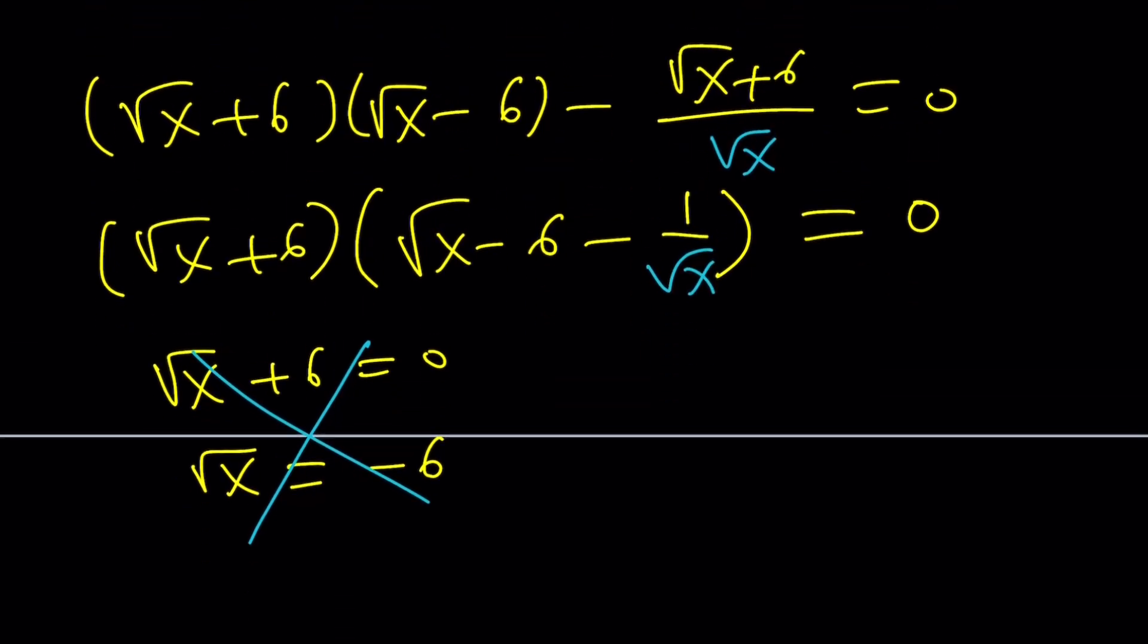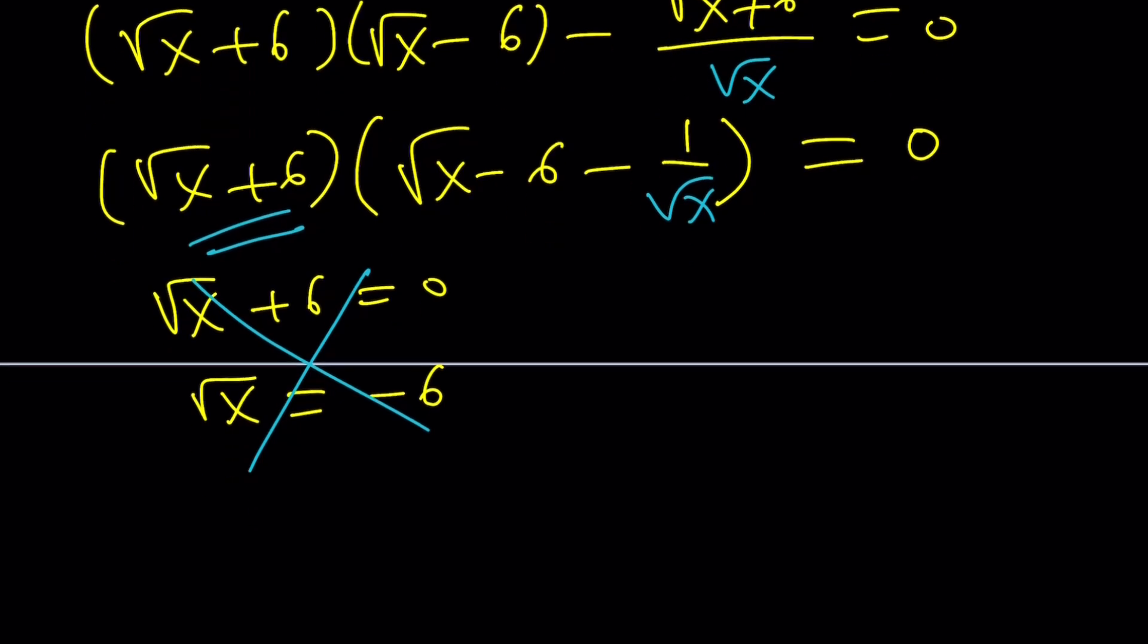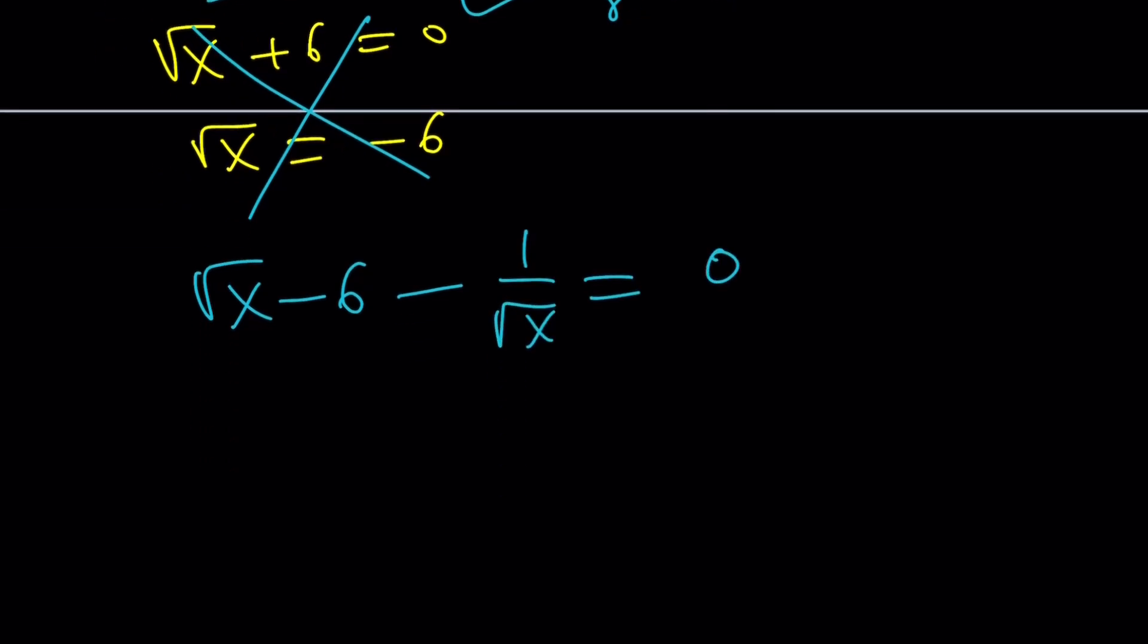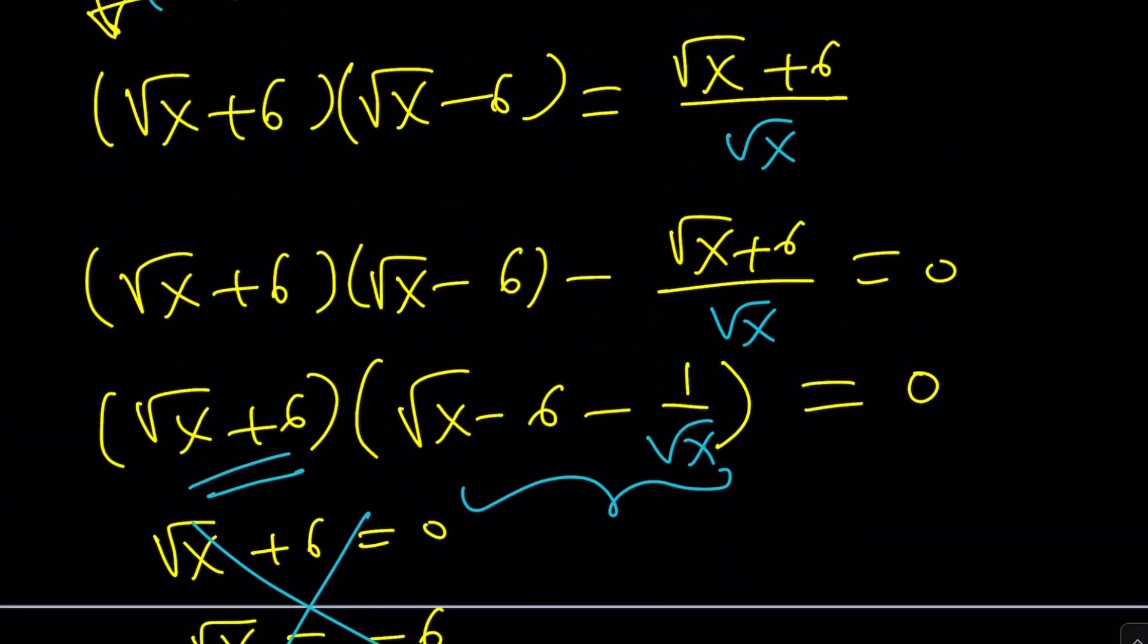Now, this is fixed, and what I need to do is, this can't be 0, so you can just divide by that, or just set the other factor equal to 0. Square root of x minus 6 minus 1 over square root of x is equal to 0. This implies square root of x minus 1 over square root of x is equal to 6. Wow. What a problem, right? Okay.